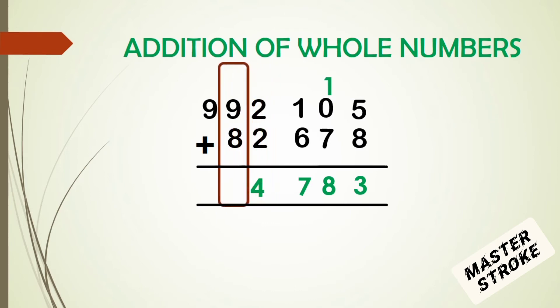In the ten thousands column, we have 9 plus 8, which gives us 17. We write 7 in the ten thousands column and carry 1 to the hundred thousands column.